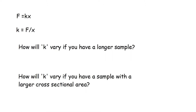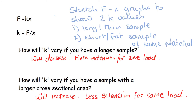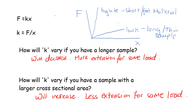A quick revision: F = kx from Hooke's Law, so k = F/x. How will k vary with a longer sample, or with a larger cross-sectional area? A longer sample will be less stiff — k decreases, giving more extension for the same load. A larger cross-sectional area increases k, making it stiffer with less extension for the same load. The short fat sample has a steep gradient on the F-x graph; the long thin sample has a lower gradient.